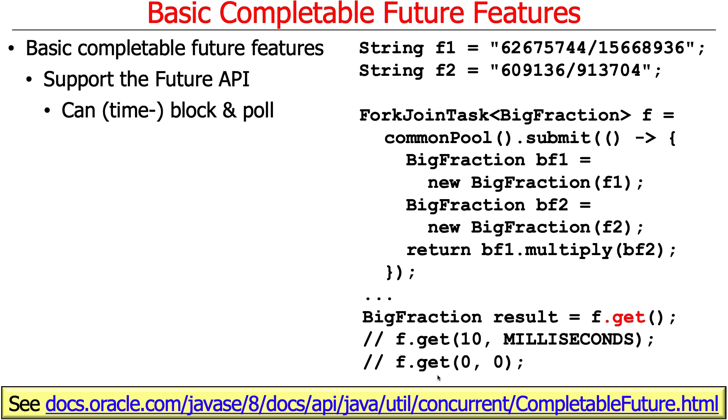Here's just a quick recap of what the basic features can do. You can submit some long-running operation that'll run in the background. In this case, we're using the common fork join pool. We're submitting this asynchronous computation, we get back a fork join task which is a future so you can wait on it. This particular example is showing how you can block to get the result.